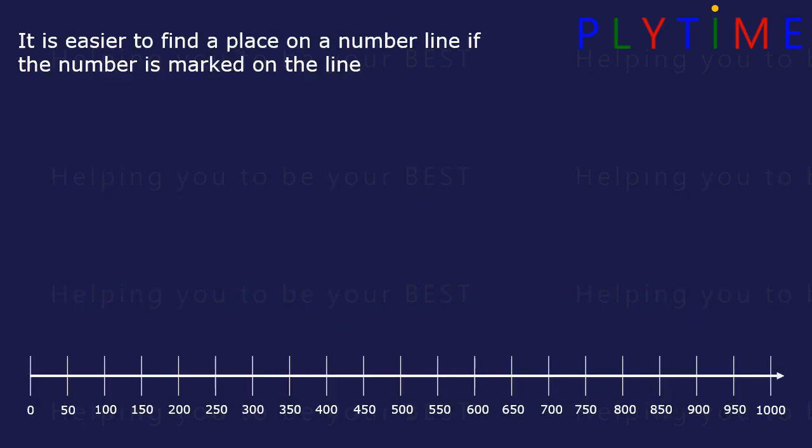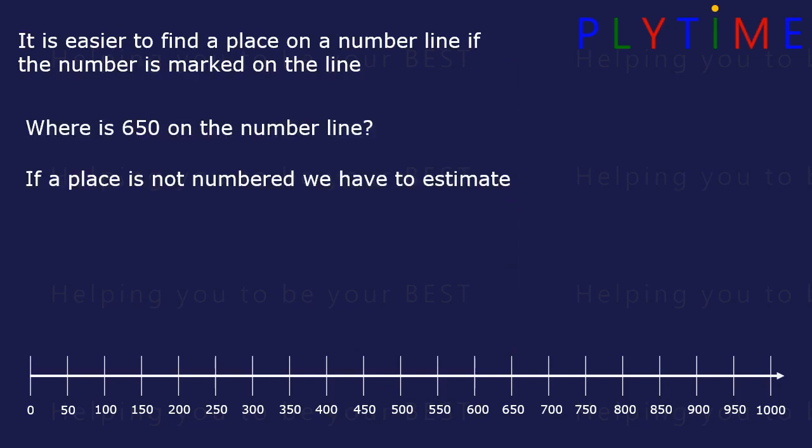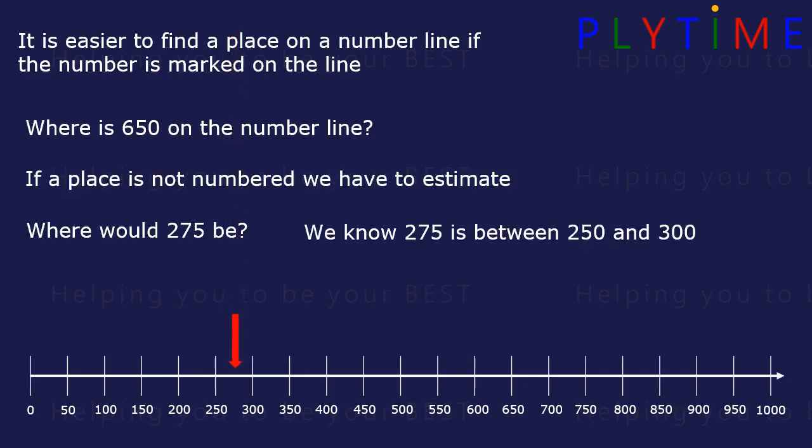It's easier to find a place on a number line if the number is marked on the line. Where's 650? It's here. If a place is not numbered, we have to estimate. Where would 275 be? We know it's between 250 and 300. It will be here.